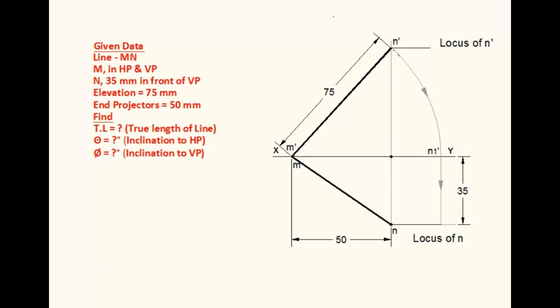Draw a vertical line from N1 dash to meet the locus of N in the plan. This point is N1. Join M and N1. This line has its true length and its angle with the XY line is the inclination with VP. Similarly, with M as center and M to N as radius, cut an arc to meet the XY line. This point is N2. By this, we made the line parallel to VP to get its true length and inclination to HP.